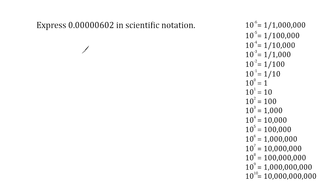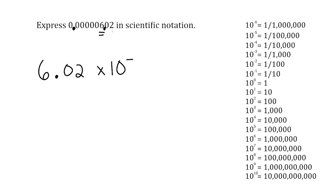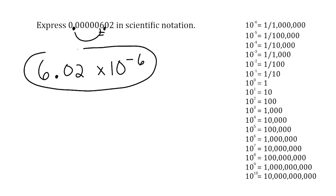For this last example, right away we should understand that our answer is going to have a negative exponent because the value is less than 1. We take our decimal and move it to the correct position so there is a single digit directly to the left of the decimal. We rewrite this as 6.02 times 10 to the negative — counting the place values we had to skip: 1, 2, 3, 4, 5, 6 — so the answer is 6.02 times 10 to the negative 6 power.